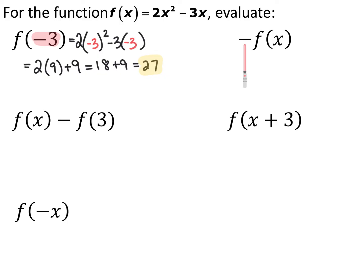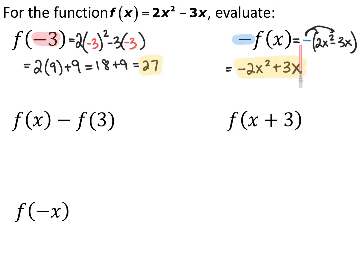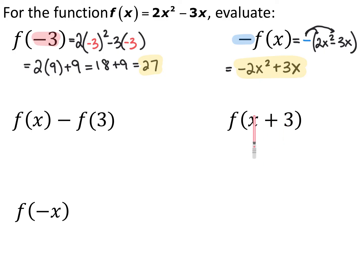Whenever you have something outside of function notation, it's going to be applied to the entire function. So for negative f of x, I'm going to multiply f of x by negative 1. That gives me negative 1 times the whole function, 2x squared minus 3x. I use parentheses to represent that, then distribute the negative in, ending up with negative 2x squared plus 3x. If something is inside the function notation, replace x with it; if it's outside, apply it to the entire function.